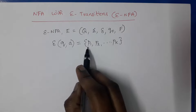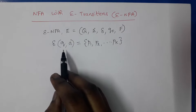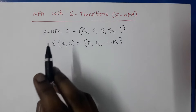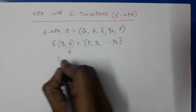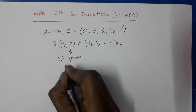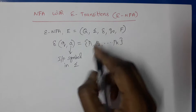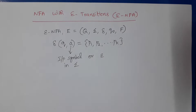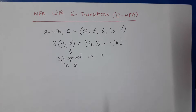The transition function takes the current state and current input as arguments and returns any number of states. It may have any number of transitions from the current state for a particular input, similar to NFA. The only difference is in the second argument of delta — this 'a' may be either an input symbol in Sigma, or it may be epsilon. This is the only difference between Epsilon NFA and NFA.